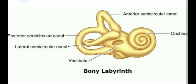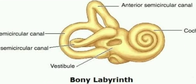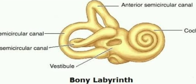The parts of the inner ear, or the bony labyrinth, are from anterior to posterior: a two-and-a-half turn snail shell-like structure called the cochlea, and just posterior to that, a referring cubical structure called the vestibule.